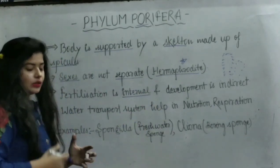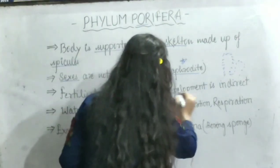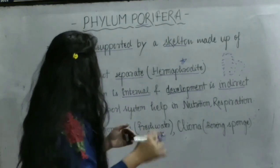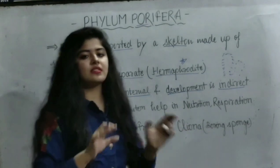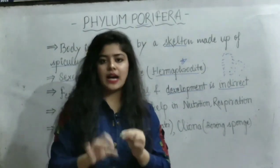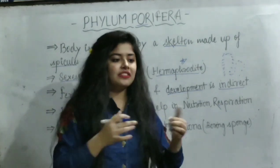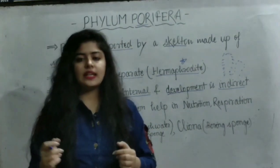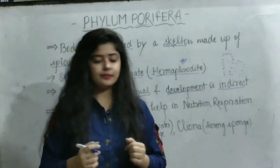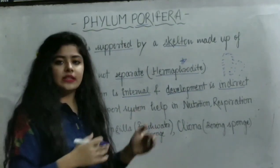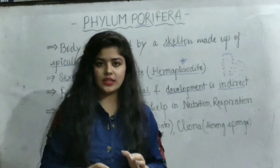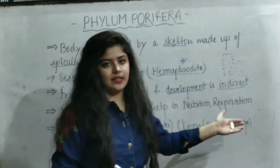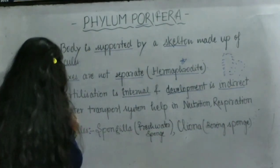Fertilization is internal — it takes place inside their body. Development is indirect, meaning a zygote does not directly change into an adult form. After the zygote is formed, a larva is produced. Different forms have different larva names, such as in Sycon, the larva formed is an amphiblastula. The larva is morphologically very different from the adult, which is why their development is indirect.